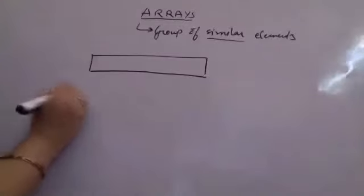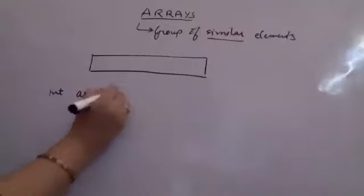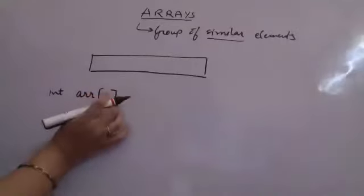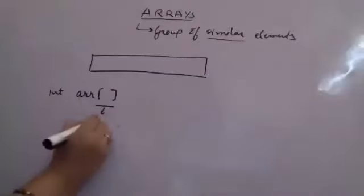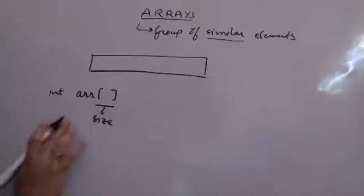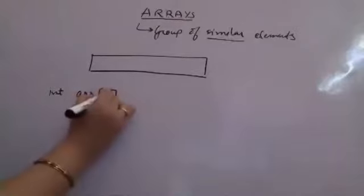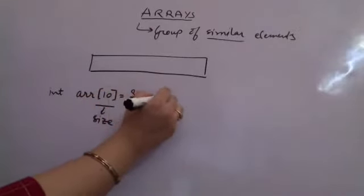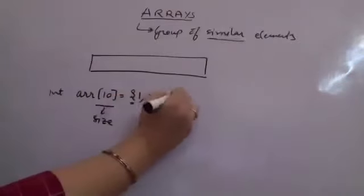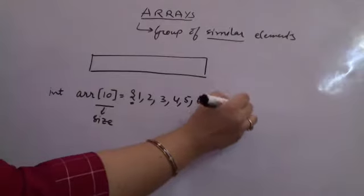If I want to declare an integer array, I can say I have an integer array. I use square brackets, and within the square brackets I mention the index. Here I am mentioning the size of the array during declaration and the index when using it. Supposedly I want an array of size 10.